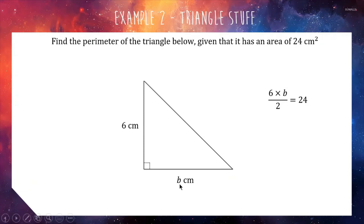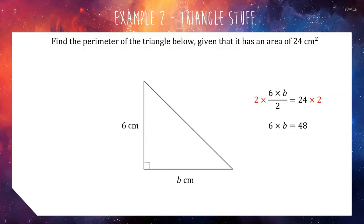I'm going to call the base B. So if I do the base multiplied by the height — 6 times B — and halve it by dividing by 2, I should get the answer of 24. Base times height gives me a rectangle, and any triangle is really just half a rectangle — that's why we divide by 2. So we multiply both sides of the equation by 2, which cancels the divided-by-2 and leaves us with 6 times B equals 48. Now we divide both sides by 6 to find B, because the times 6 and divide by 6 are inverse and vanish, giving us B equals 8.